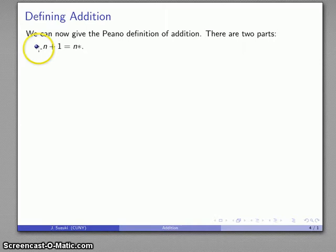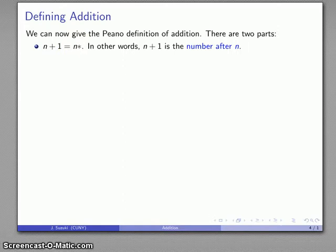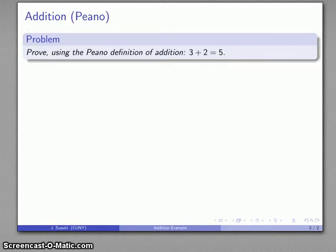And there are two parts. First of all, we're going to define what it means to write n plus 1. Well, n plus 1, by the Peano definition, is the same as n star. In other words, n plus 1 is the number after n. Now, we have a somewhat more complicated second part of the definition. n plus k star. Well, that's going to be n plus k star. n plus the successor of k is the same as n plus k, the successor of whatever that number happens to be. And it might not be obvious why we have to define it in this rather strange way. But we'll take a look at that when we see an example of how we apply these definitions.